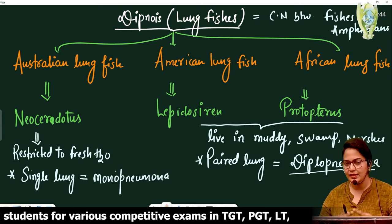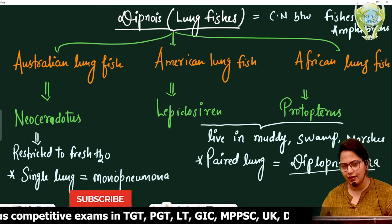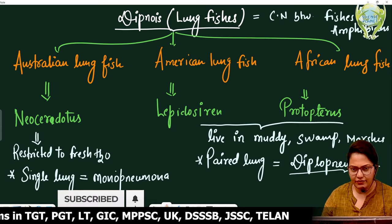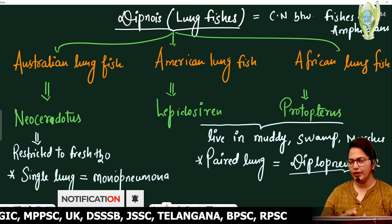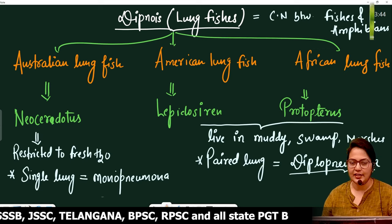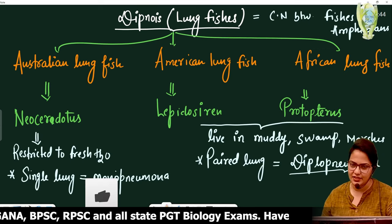Lung fishes are called Dipnoi class, which is bony fishes. They are bony fishes, but they have lungs, so they are known as lung fishes.